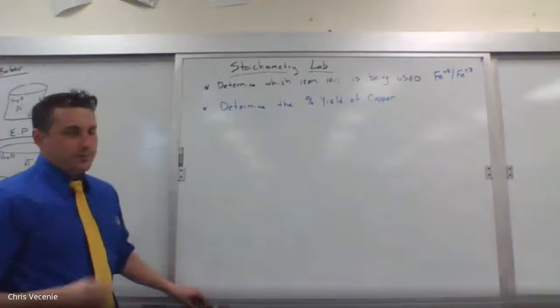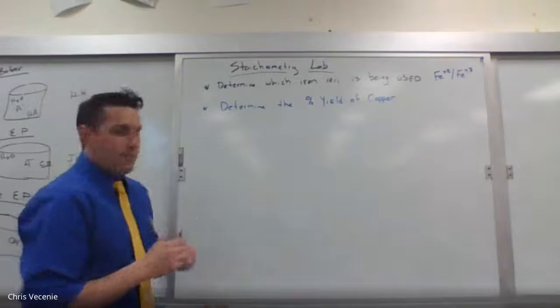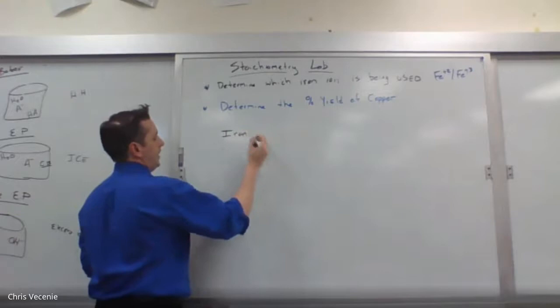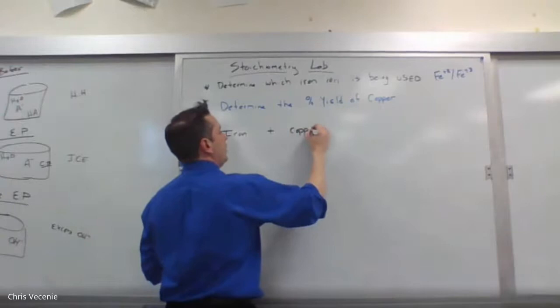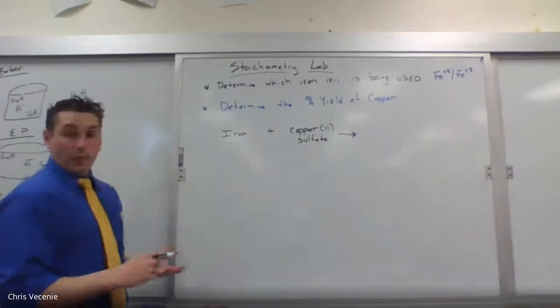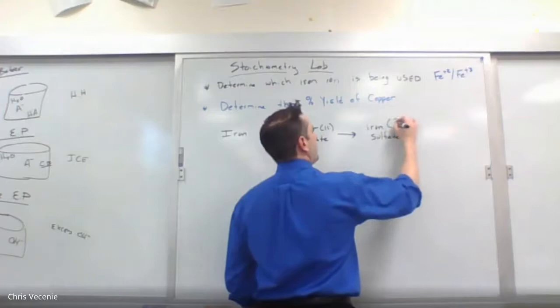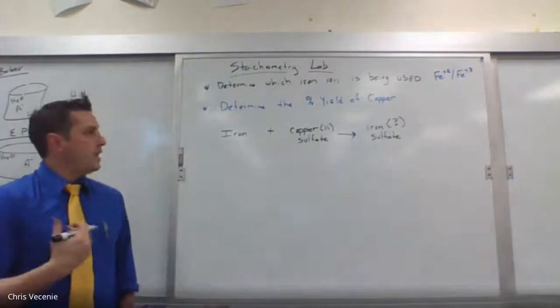You're going to see when we write out the equations that we are generating copper as a product — that's what we can gather and isolate, which means we can calculate the percent yield. What you're going to do is take a sample of iron metal and react it with copper sulfate. From last chapter you'd recognize that as a single replacement reaction — the iron kicks out the copper — leading to some iron sulfate. We're trying to figure out which version of the iron: plus two or plus three.